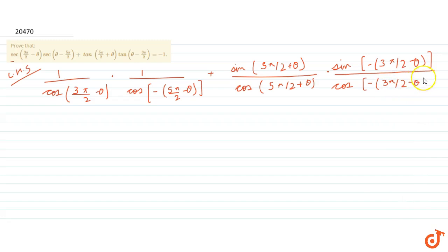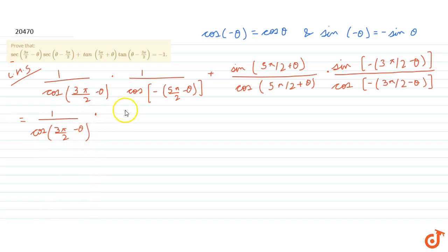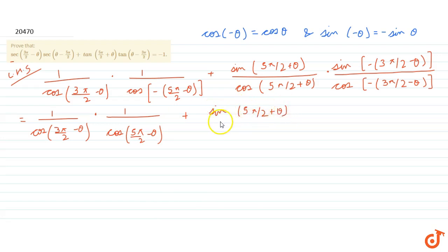Now we will use the identities that cos(-θ) = cos θ and sin(-θ) = -sin θ. Applying these, we get 1 by cos(3π/2 - θ) multiplied by 1 by cos(5π/2 - θ), plus sin(5π/2 + θ) divided by cos(5π/2 + θ).